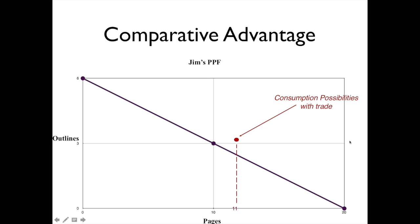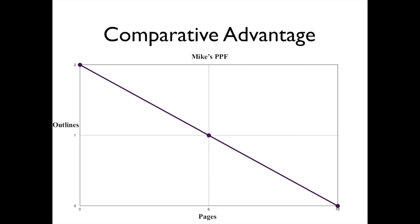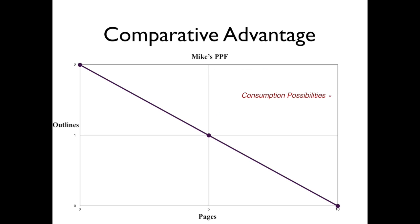You would think that this one extra page comes at the expense of Mike, but it actually doesn't. Mike's PPF with trade: if he spends all his time making outlines he can make two; all his time making pages he can make 10. With trade, however, his outline production drops to one but his page consumption actually goes up to six — so he also gets one additional page. The benefits of trade come from what in economics we call specialization — doing the things that you tend to do best. Those are the things you want to focus on.